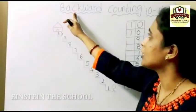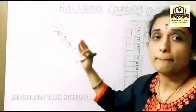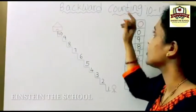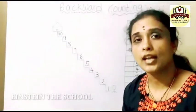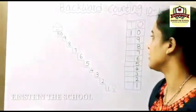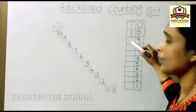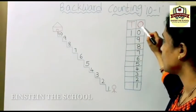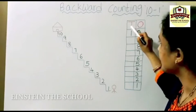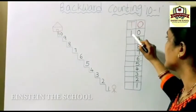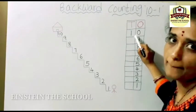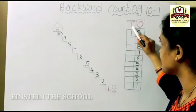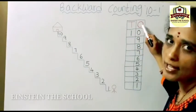In backward counting, you will always write the numbers from big number to small number. Now, using the place values, how will you write the backward counting? Here we have O and T — O means ones, T means tens. Now 10 is a 2-digit number.